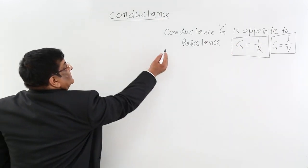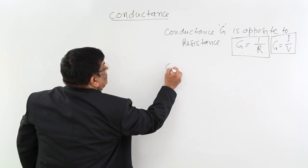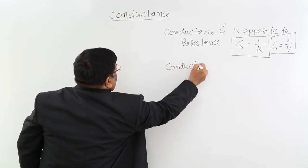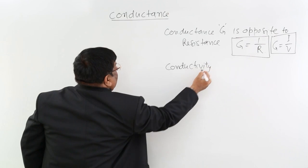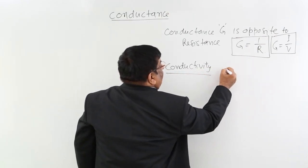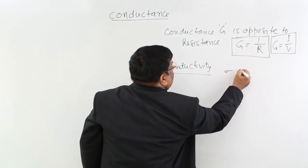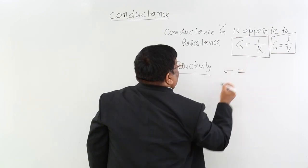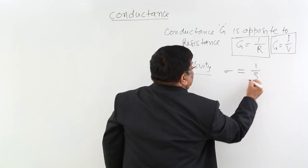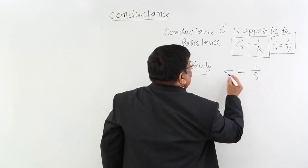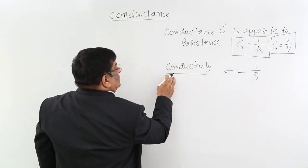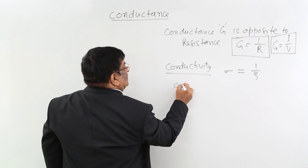Another thing we study along with this is conductivity. Conductivity has the symbol sigma, and sigma is equal to 1 upon resistivity. This is conductivity, and it is a property of conductors.